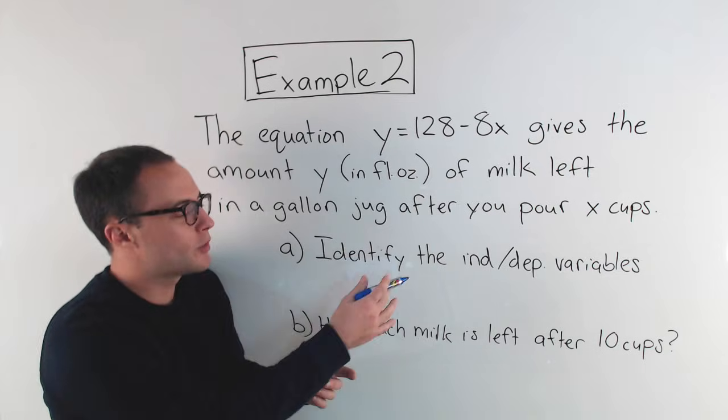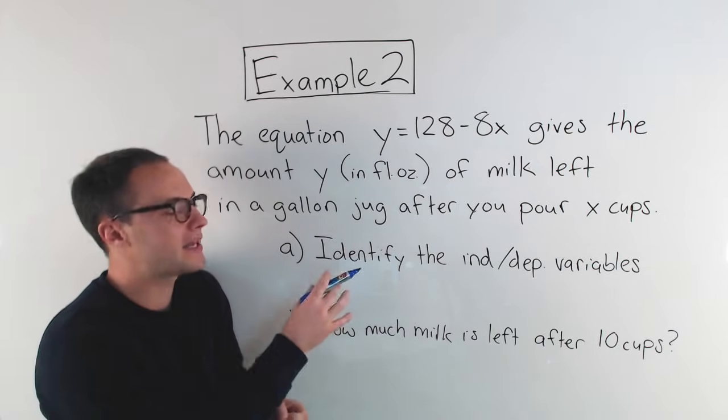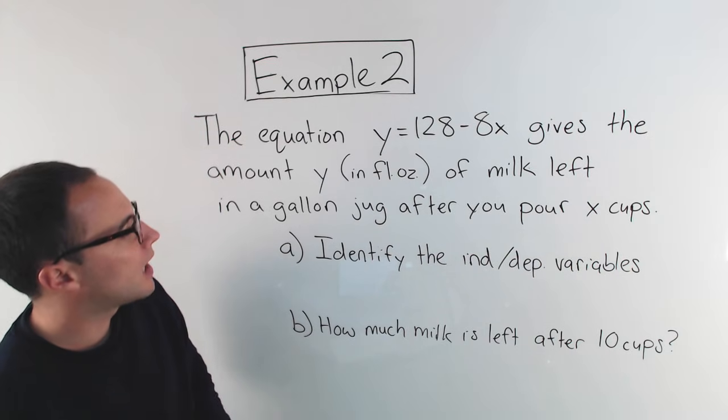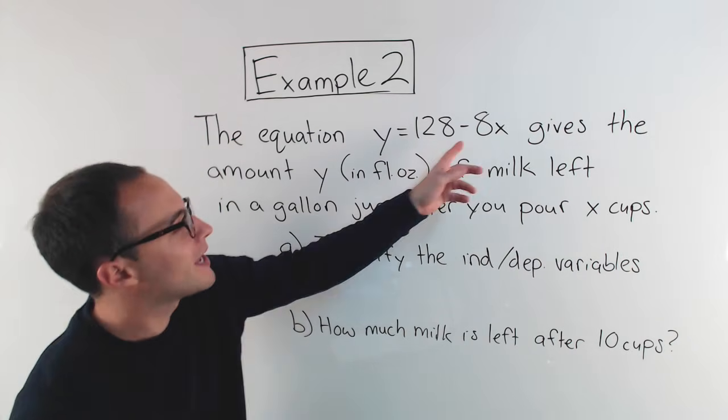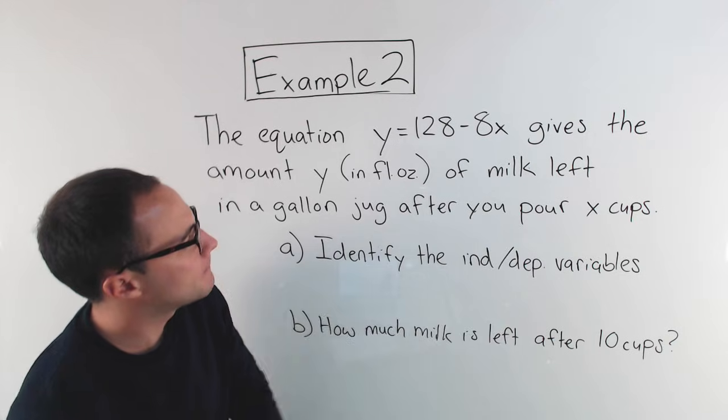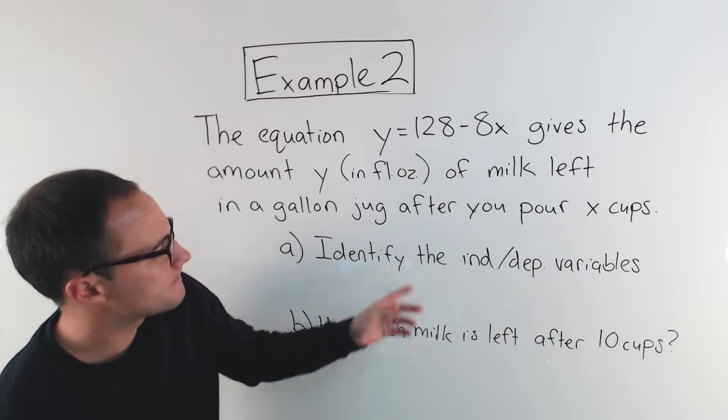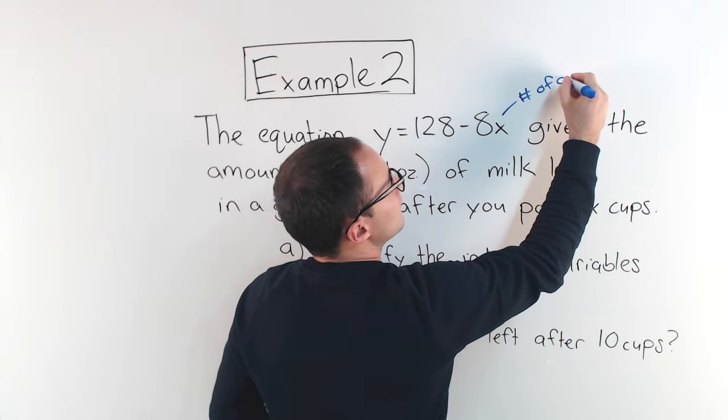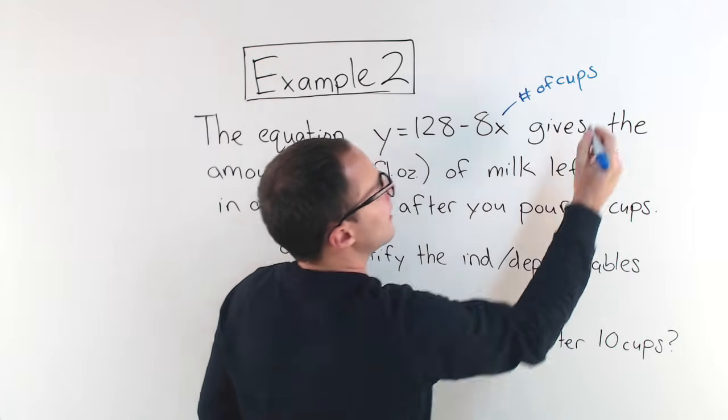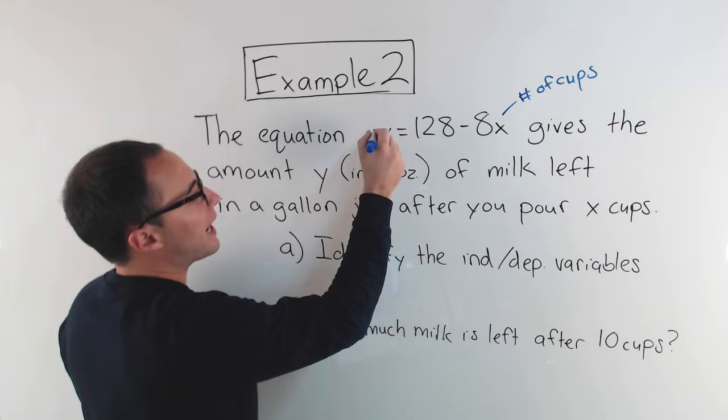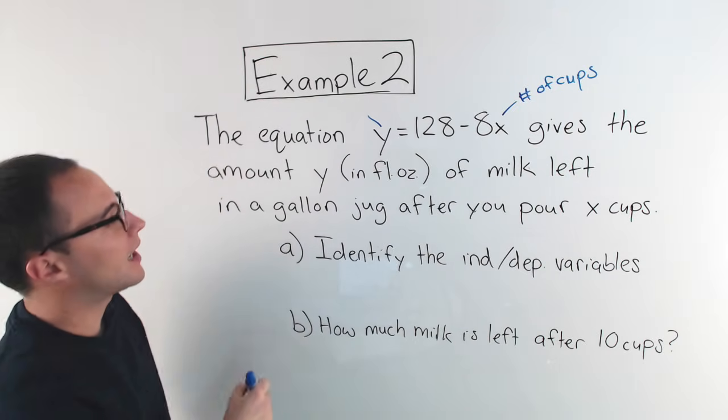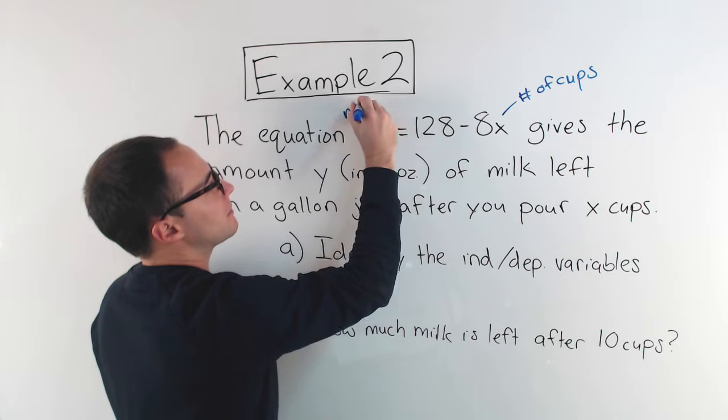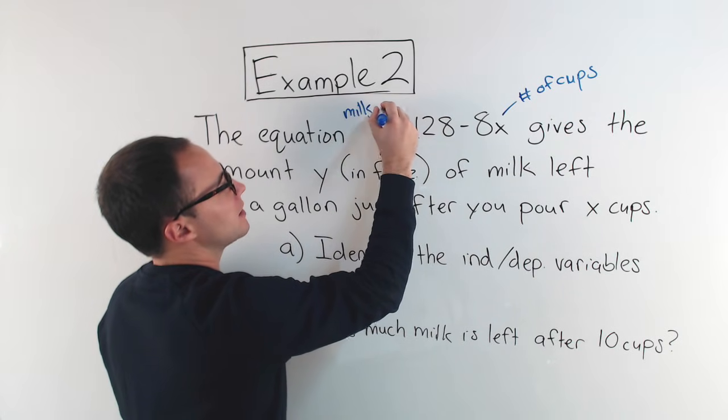So sometimes when you're doing this, it's easier to find out the dependent variable first. So in this situation, first, what are our two variables? Well, we've got y and x. What does that x represent? Well, x represents the number of cups of milk that we pour out of the jug. Y represents how much is left, the amount y in fluid ounces of milk left.